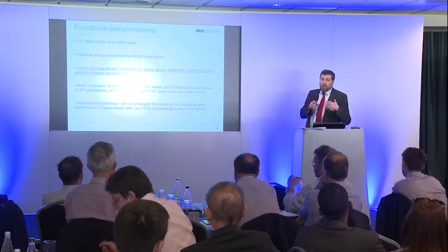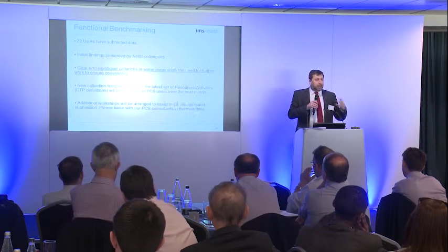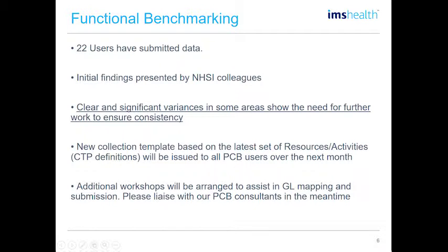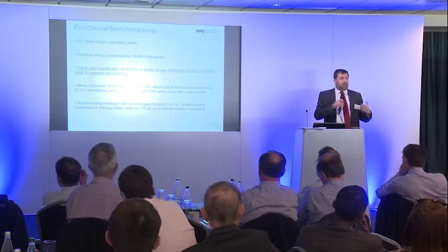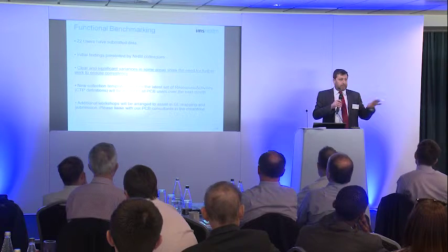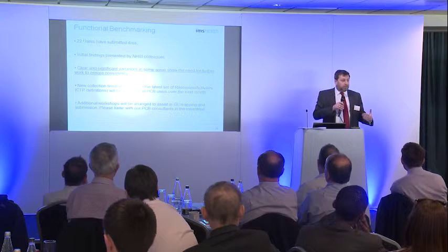Going back to functional benchmarking: the latest version of the dashboard includes information from 22 NHS trusts. Some participated in the original pilot work, some submitted information at the latest stage, but the current dashboard contains information from 22 organisations. They've all gone through the process of taking the general ledger and mapping it to a defined list of cost areas, cost outputs — also known as cost resources — and activities. We can all see significant variances.